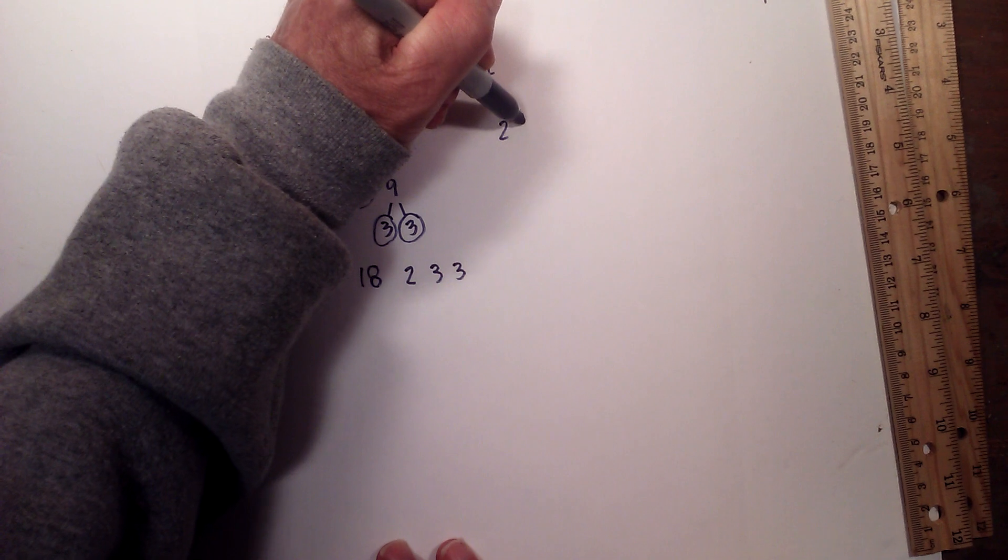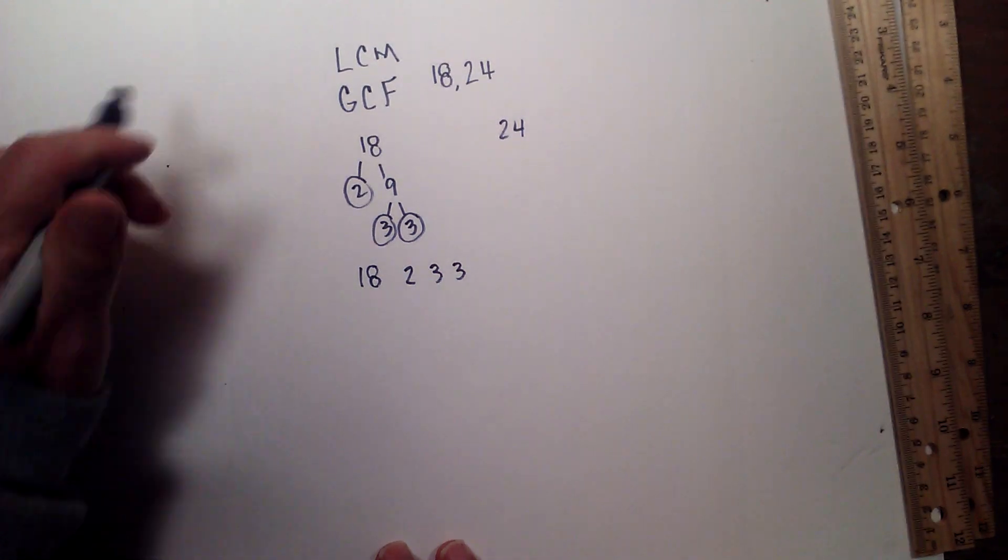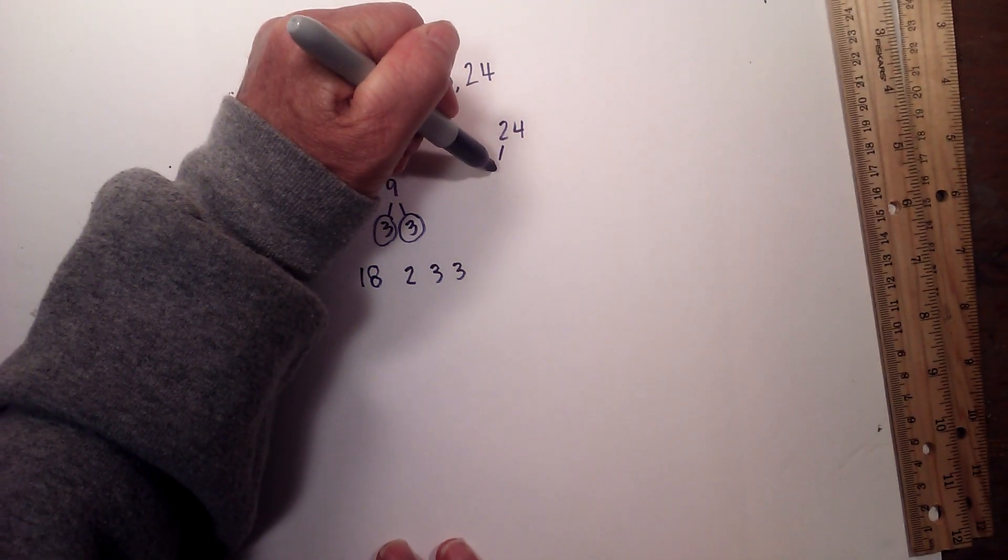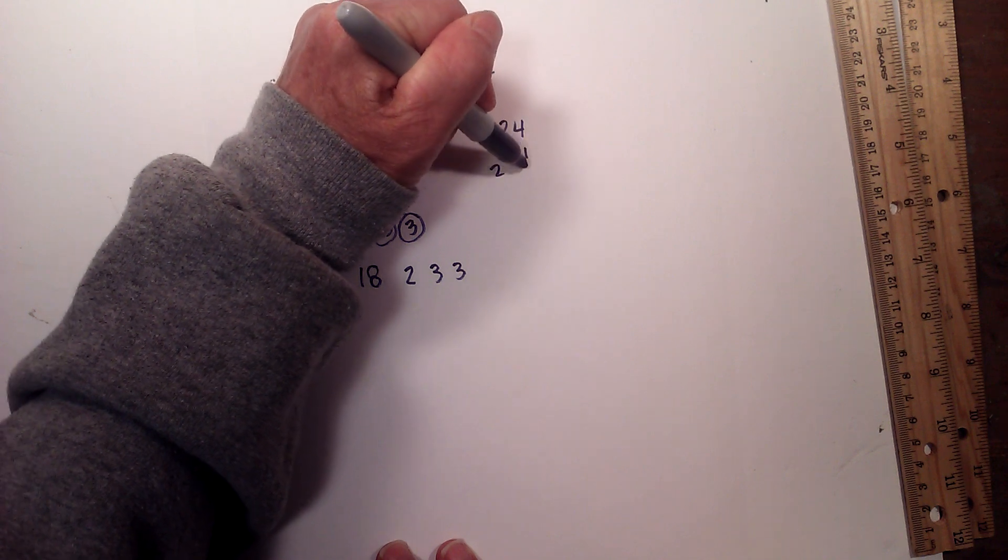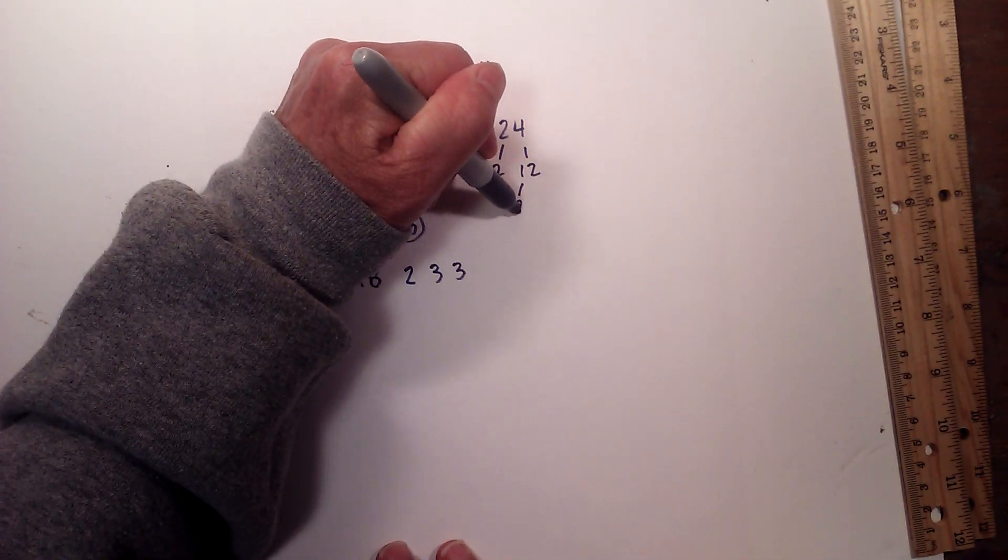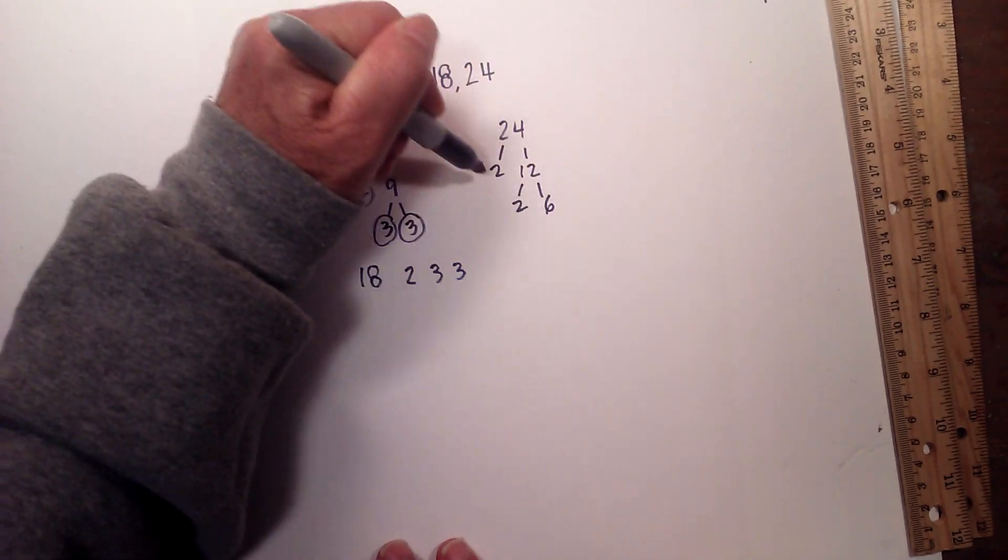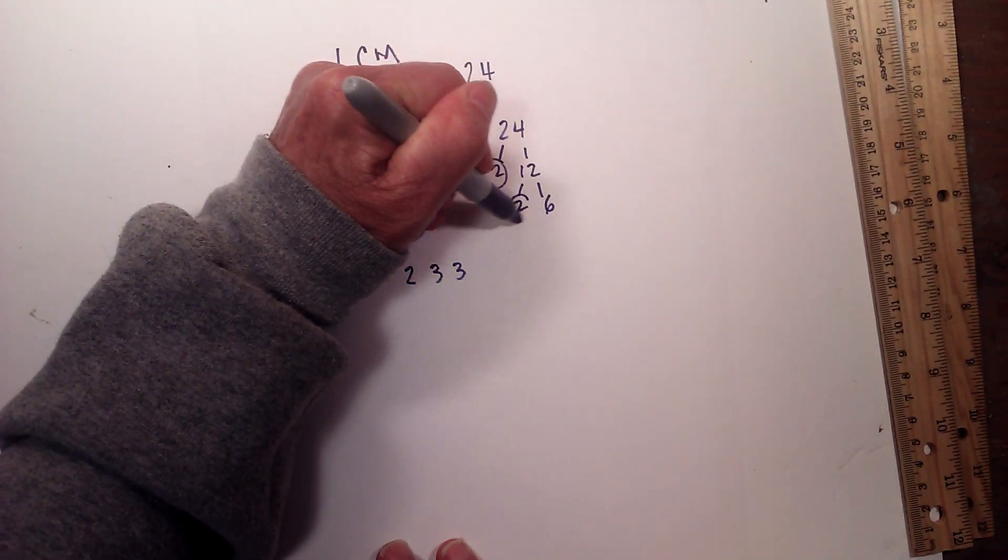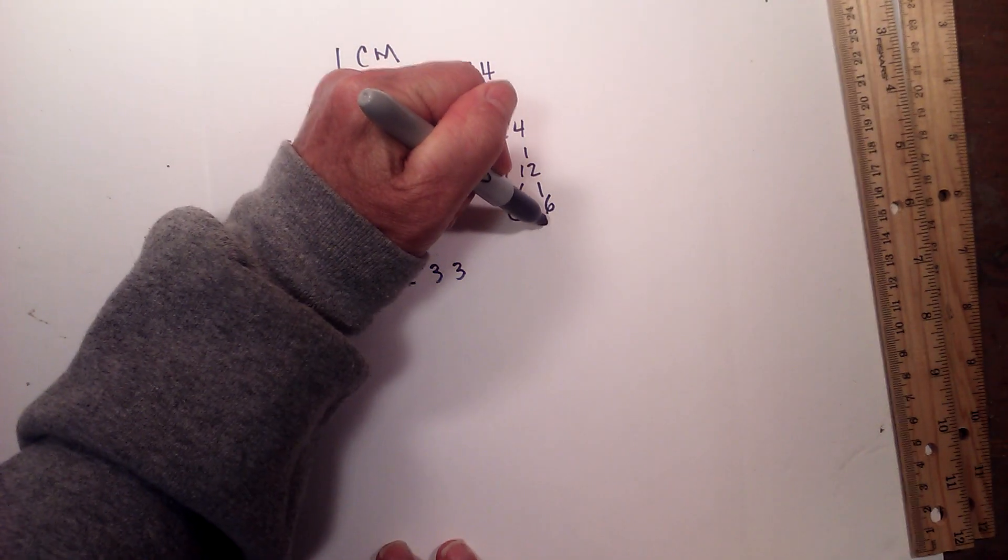24 is 2 times 12, and then next we have 2 times 6. I'm going to circle both 2's because they are prime, and then let's go with 2 times 3 equals 6. Circle the 2 because it is prime.